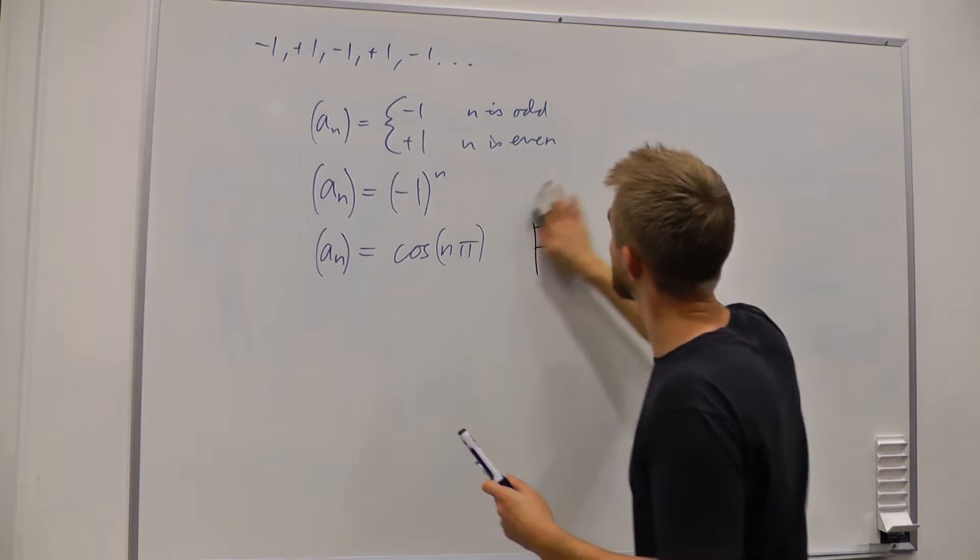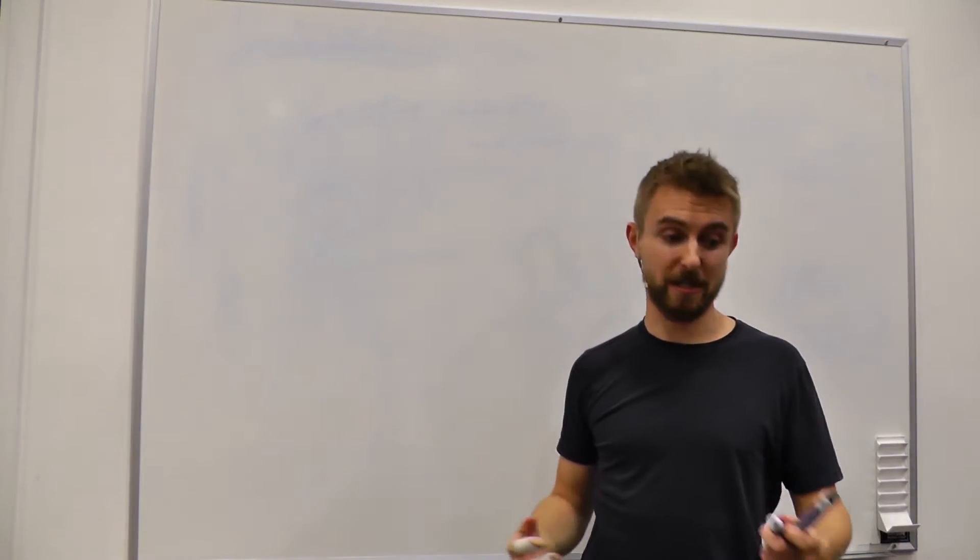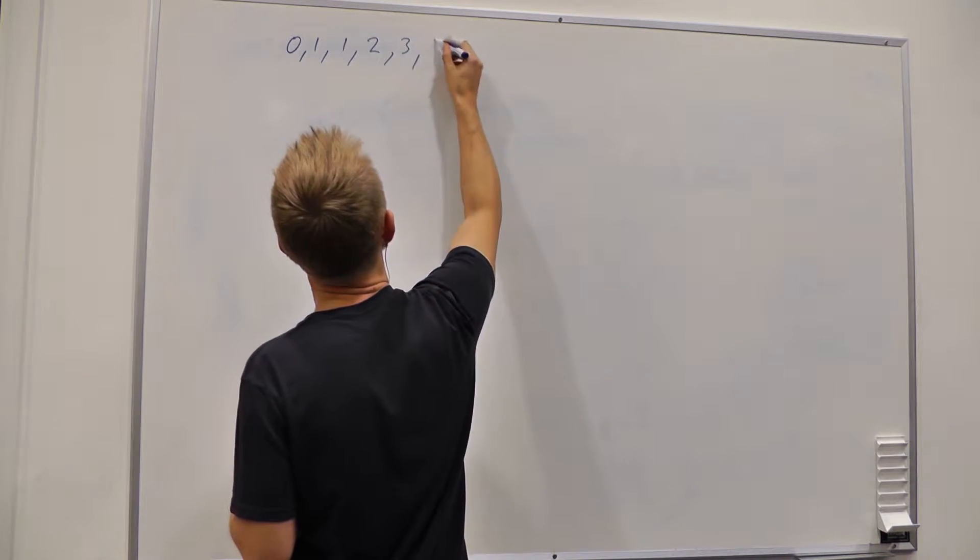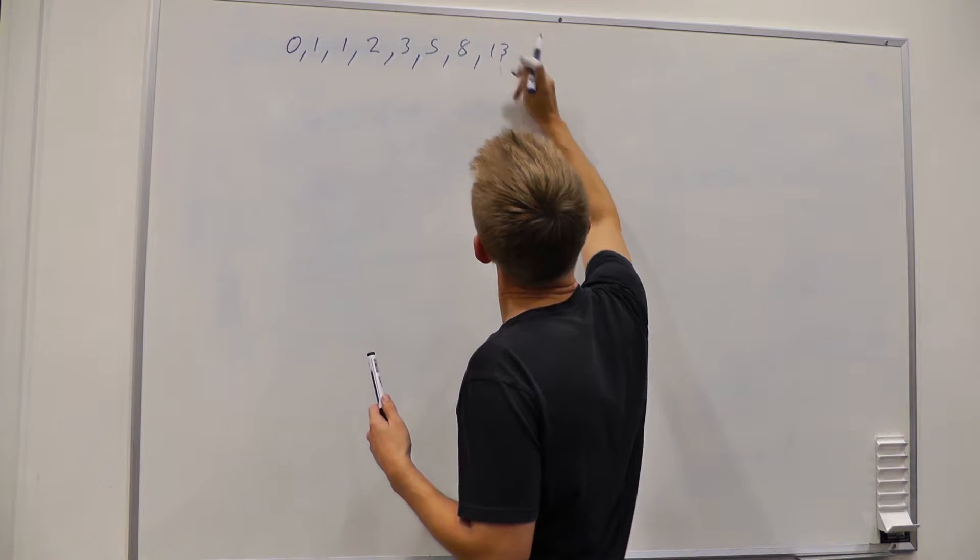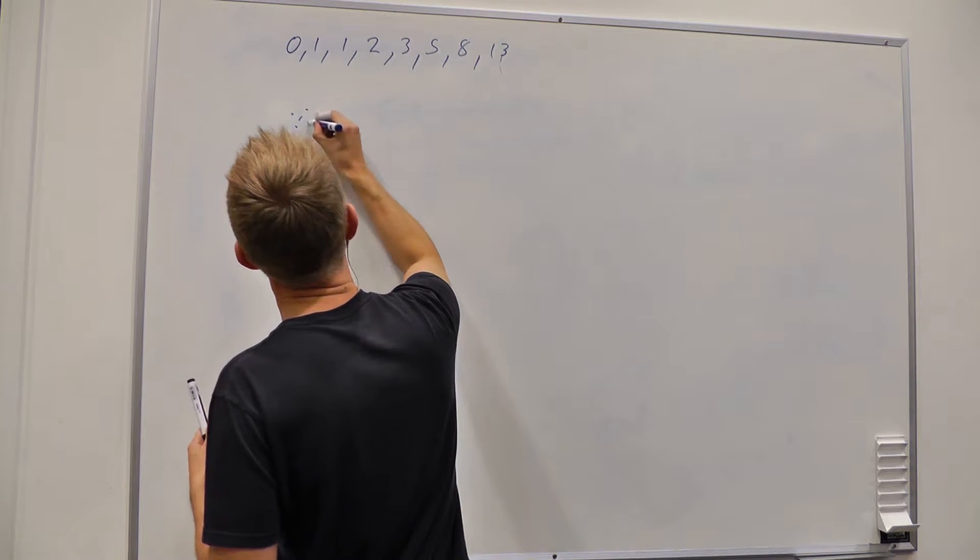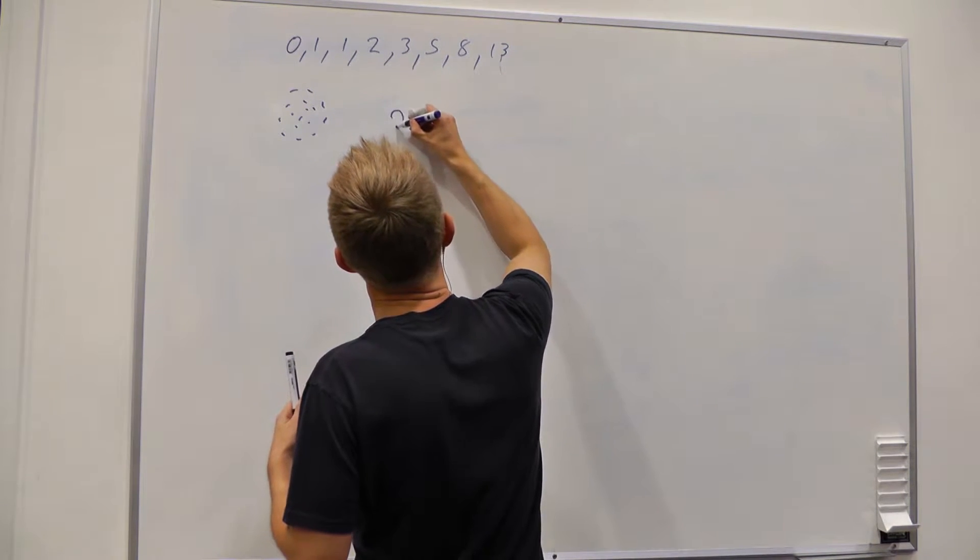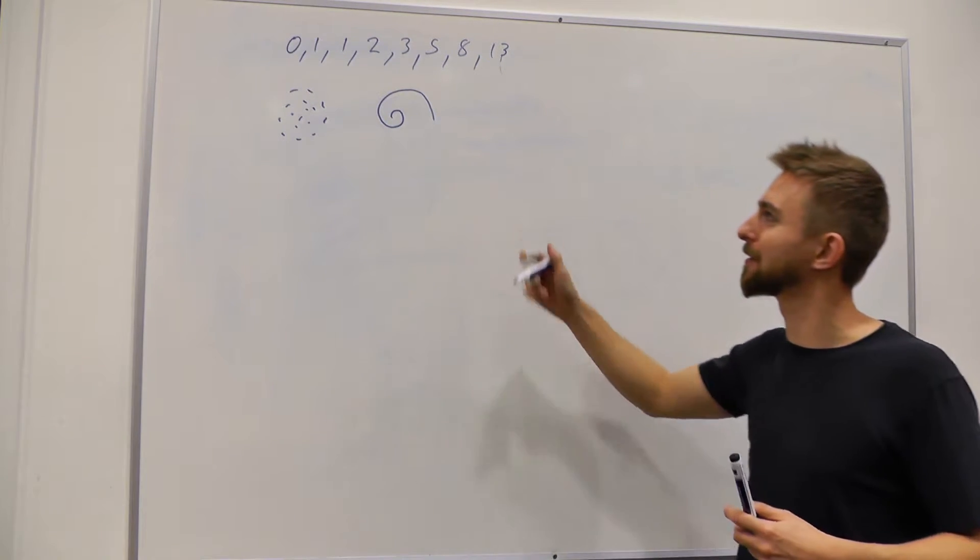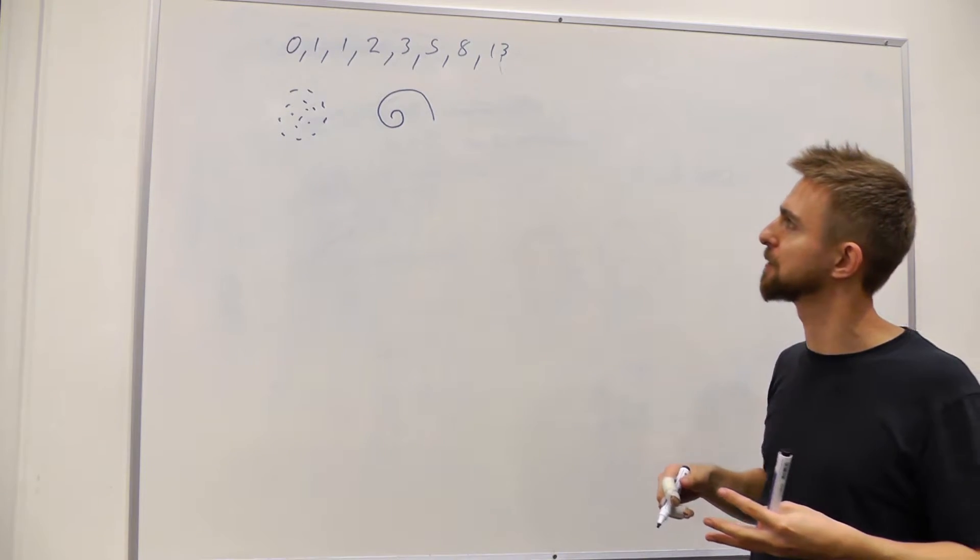Okay, so sequences and series also come up in nature a lot. So perhaps the most famous example of this is the Fibonacci sequence, which looks like this. So 0, 1, 1, 2, 3, 5, 8, 13. Okay, here's the Fibonacci sequence. This thing turns up in the arrangement of seeds in the head of a flower. It also turns up in the shape and structure of shells in the sea. Okay, very different parts of the natural world, but just turns up again and again. It turns out to be a very efficient way of stacking things close together in a spiral formation.